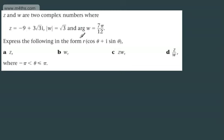We need to express the following in the form r(cos θ + i sin θ): z, w, zw, and z/w. We need to ensure that θ is between negative and positive π.